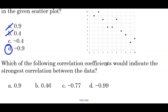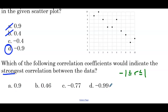Which of the following correlation coefficients would indicate the strongest correlation between the data? Remember, the correlation coefficient is between negative 1 and 1 — negative 1 being perfect negative, 1 being perfect positive. We're looking for which value is closest to either negative 1 or 1. Looking at the choices, we see 0.9, but we also see negative 0.99. This correlation coefficient is closer to negative 1 than 0.9 is to positive 1, so D indicates the strongest linear correlation. Sometimes these questions give a value larger than 1, like 1.2, or negative 1.1 — we can't choose those because the correlation coefficient must be between negative 1 and 1 inclusive.